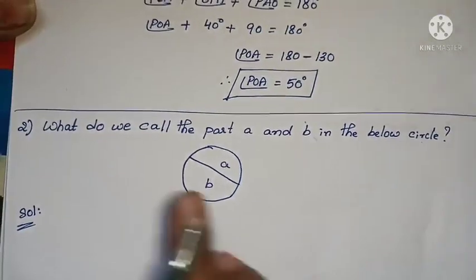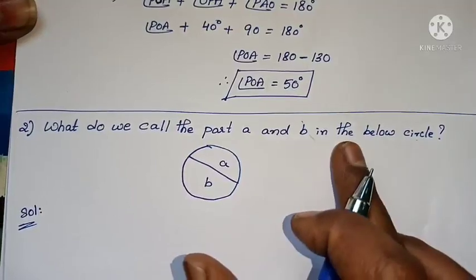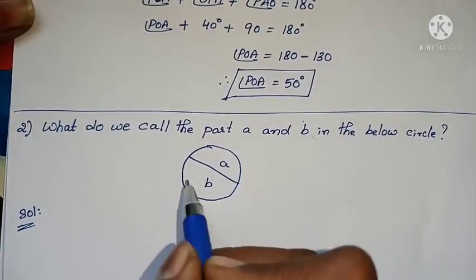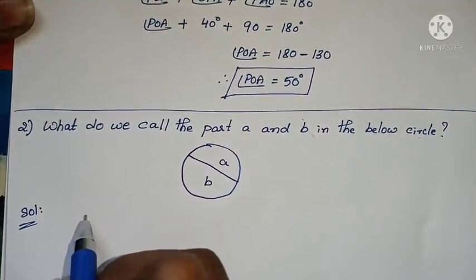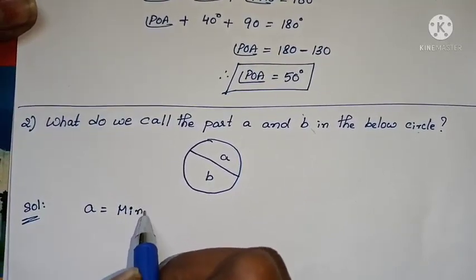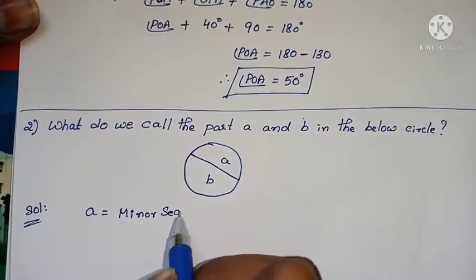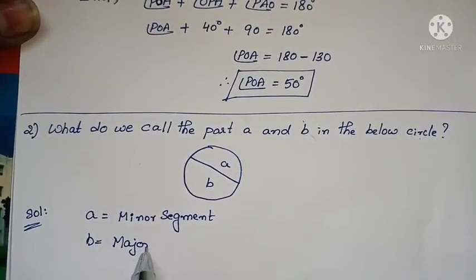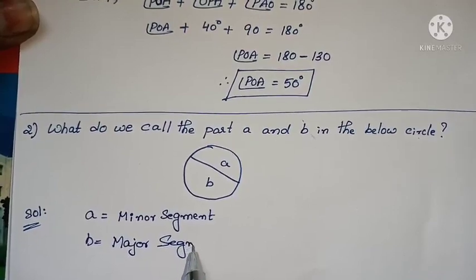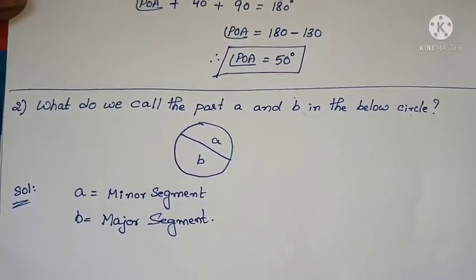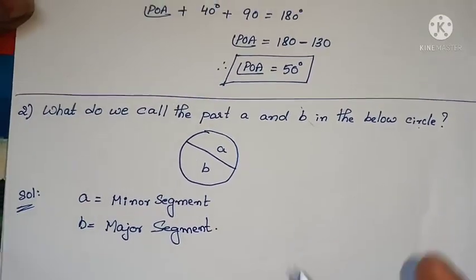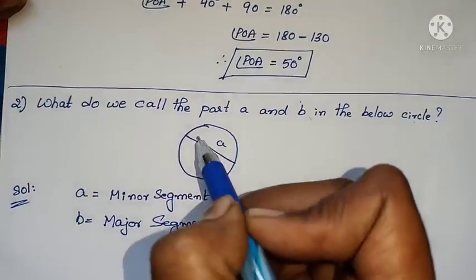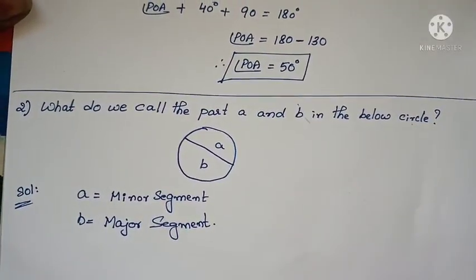The next problem: what do we call parts A and B in the given circle? Part A is the small part — it is a minor segment. Part B is the larger part — it is a major segment. This is from last year's question papers, worth one mark. A is minor segment, B is major segment.